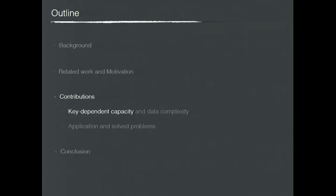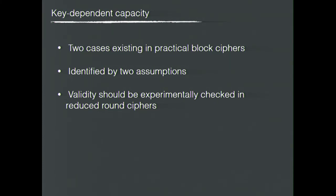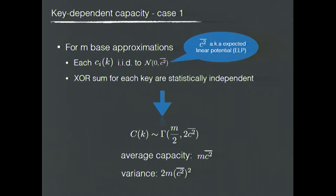We first start by studying the key-dependent capacity in multidimensional attacks, focusing on two cases that both exist in practical block ciphers. These two cases are identified by two assumptions, and we check the validity of these assumptions in experiments on reduced-round ciphers. In Case 1, we assume that the correlation of each base approximation is identically and independently distributed according to a normal distribution.